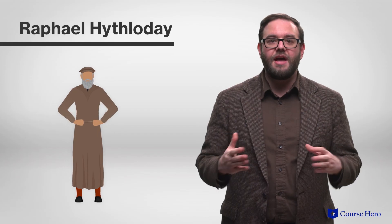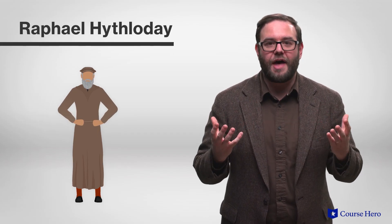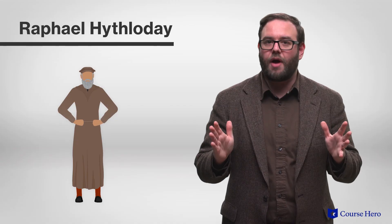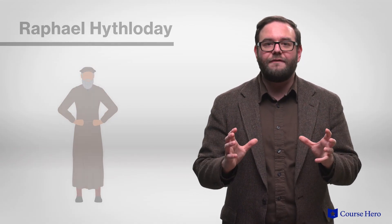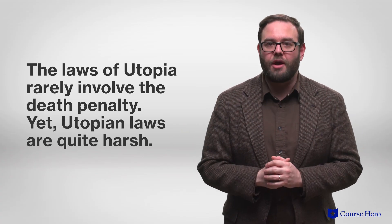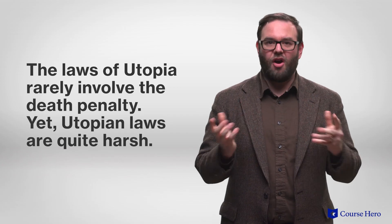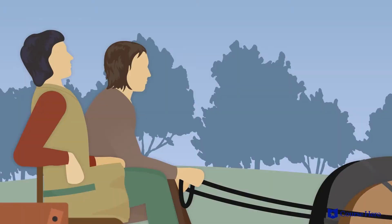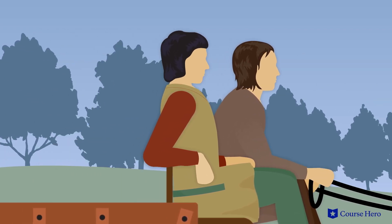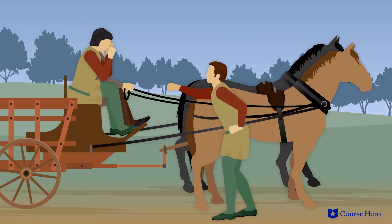Crime and punishment is another main idea addressed many times and in different ways throughout Utopia. Raphael Hithloday describes consequences for theft that don't involve executing a criminal for a crime less heinous than murder, arguing that won't convince other potential criminals that the crime isn't worth committing. The laws of Utopia rarely involve the death penalty, yet Utopian laws are quite harsh. Some actions that wouldn't be considered crimes elsewhere are punishable by enslavement in Utopia. Work and industry are highly valued, so a man can be enslaved for the crime of wandering the countryside without working or without permission.